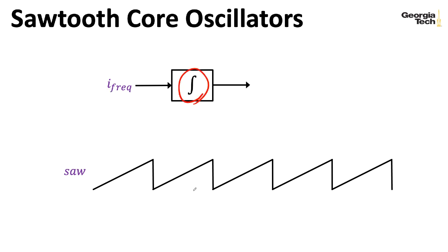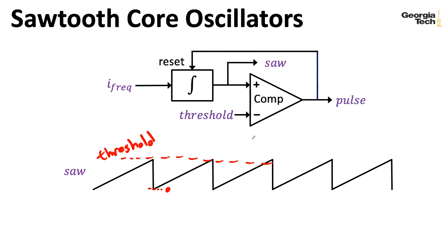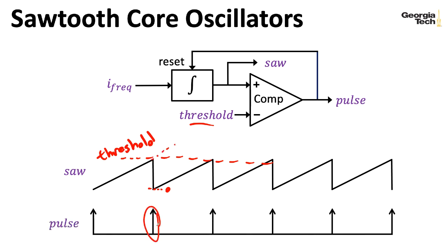If we input a constant into this integrator, what happens when you integrate a constant? You get some sort of line. We'll assume the input is a positive number, indicating an upward slope, though you could also build sawtooth core oscillators that have a downward slope. What we need to have happen is for the waveform to reset back to zero once it reaches some sort of threshold.